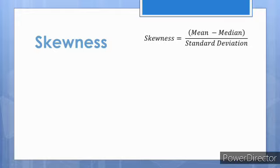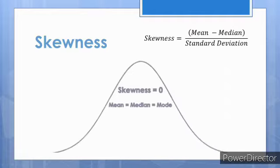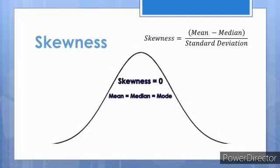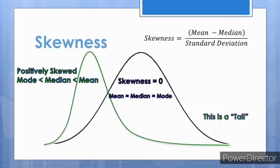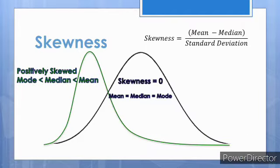Skewness is a measure of the symmetry of distributions. Pearson's skewness coefficient provides an algebraic estimation of symmetry. In a perfectly normal distribution, the skewness coefficient will equal zero because the mean equals the median. Positive skewness means there is a pileup of data to the left, leaving the tail pointing to the right side of the distribution, and the mean is to the right of the median.